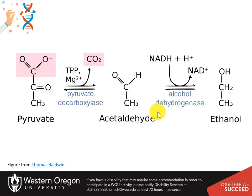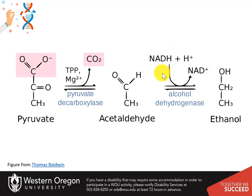Two major enzymes are involved during this conversion. First, pyruvate is decarboxylated by pyruvate decarboxylase, an enzyme that requires thiamine pyrophosphate and magnesium as cofactors, producing the acetaldehyde intermediate. Acetaldehyde is then reduced into ethanol by the enzyme alcohol dehydrogenase. The alcohol dehydrogenase step uses NADH as the electron donor or reducing agent during the reaction.